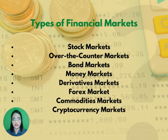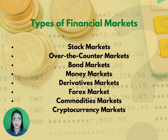There are different types of financial markets: stock markets, over-the-counter markets, bond, money, derivatives, forex, commodities, and cryptocurrency markets. Stock markets are venues where companies list their shares to be bought and sold by traders and investors. Stock markets or equity markets are used by companies to raise capital via an initial public offering or IPO, achieving goals such as expansion, acquisitions, and innovation.